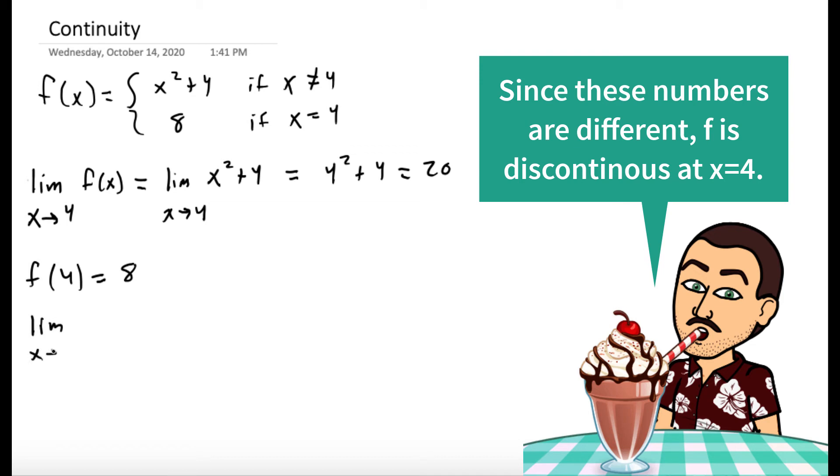And now we check, are these two numbers the same? While the limit as x goes to 4 of f of x is equal to 20, and that is not equal to 8 which is the function evaluated at 4. And so we can conclude that f is discontinuous at x equals 4.